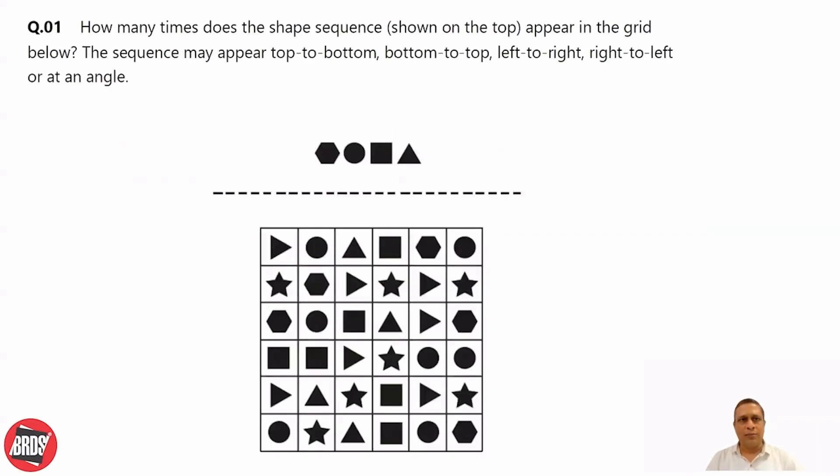First question: how many times does the shape sequence appear in the grid below? The sequence may appear top to bottom, bottom to top, left to right, right to left, or at an angle.